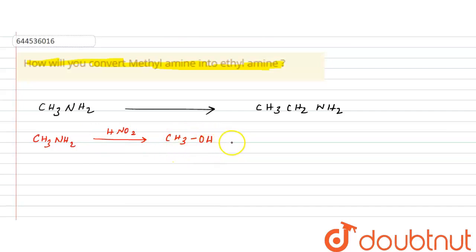Now when you treat this alcohol with PCl5, we know this reaction that we use phosphorus pentachloride to finally get the formation of alkyl chloride. So that CH3Cl will be formed.